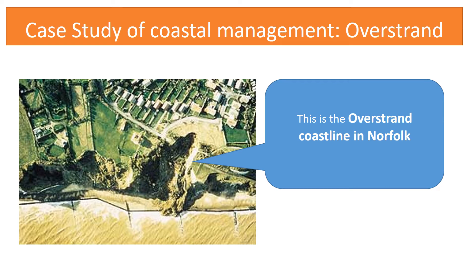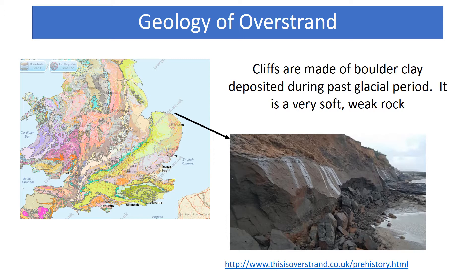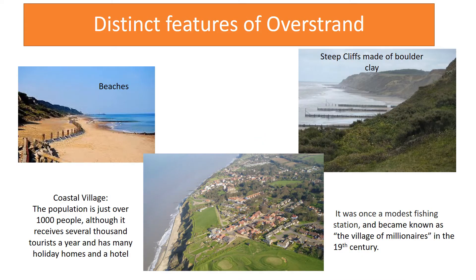A case study of coastal management that we studied was the Overstrand coast in Norfolk. Overstrand is located on the Norfolk coast, which is on the east coast of the United Kingdom, near Cromer. The geology of Overstrand is very distinct — the cliffs are made of a very soft rock called boulder clay, which was deposited here during the past glacial period and is very easily eroded.